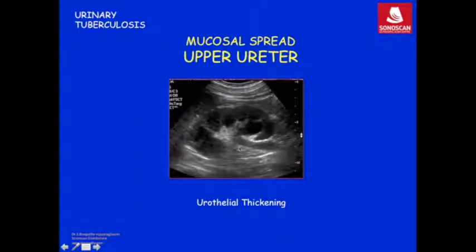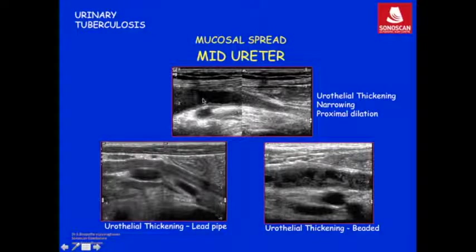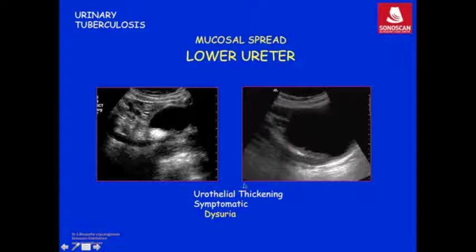The same urothelial thickening can be seen in the upper ureter. In the mid and lower ureter, there are three different appearances: urothelial thickening causing narrowing of the ureter with proximal dilatation; uniform urothelial thickening resembling a lead pipe; or intermittent granulomas with lumen seen in between appearing like a beaded ureter, as also described on IVP. Classically, in the lower ureter, urothelial thickening extends up to the ureterovesical junction.